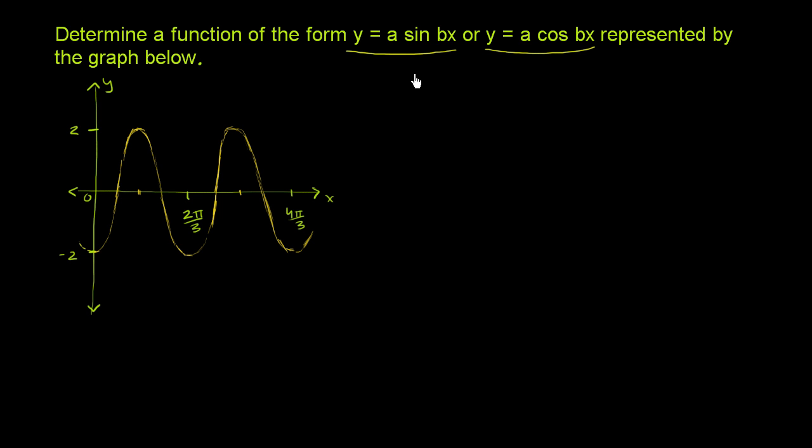So we need to figure out maybe what the a's are, what the b's are, whether this is a sine or a cosine function. So let's see what clues there are. The first thing that I notice is that whatever this function is, when x is equal to 0, it does not equal 0. It is equal to negative 2. So based on that, do you think, based on what we know about sine and cosine functions,